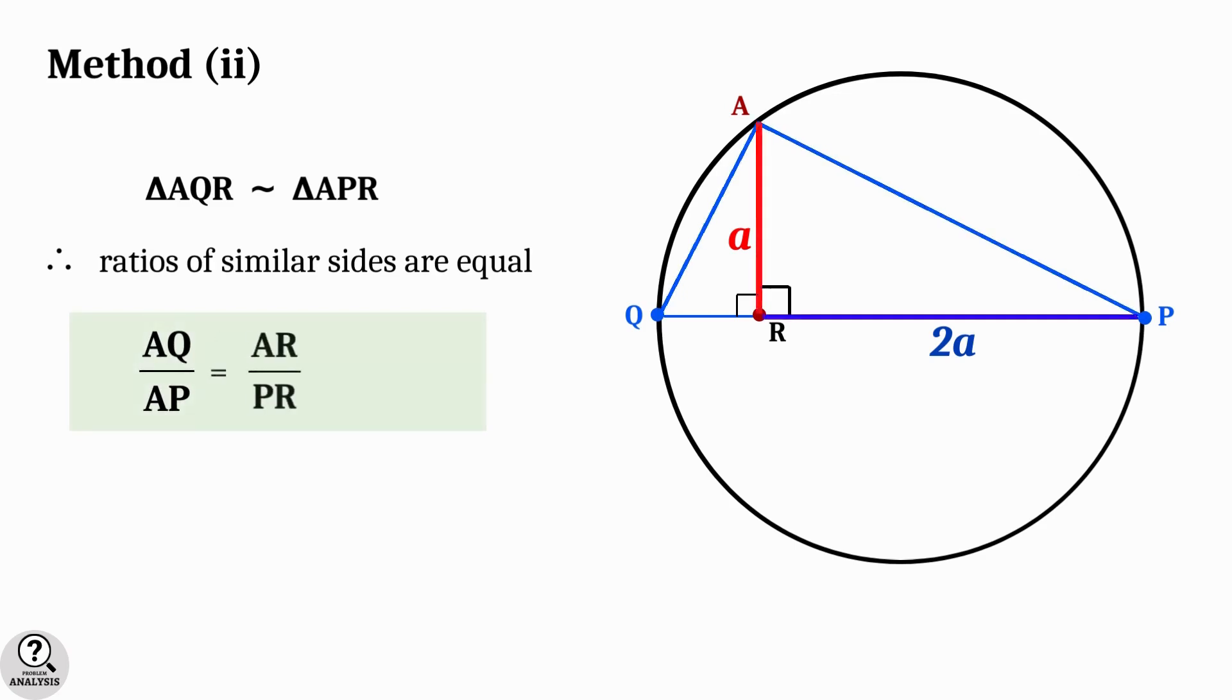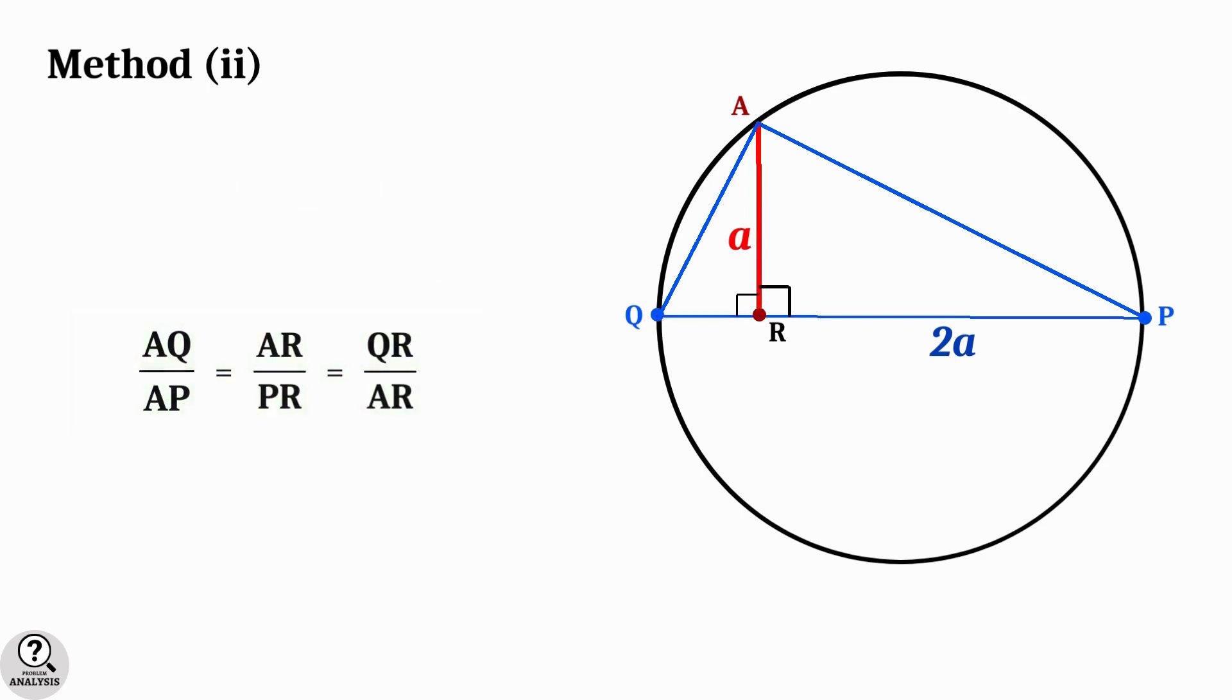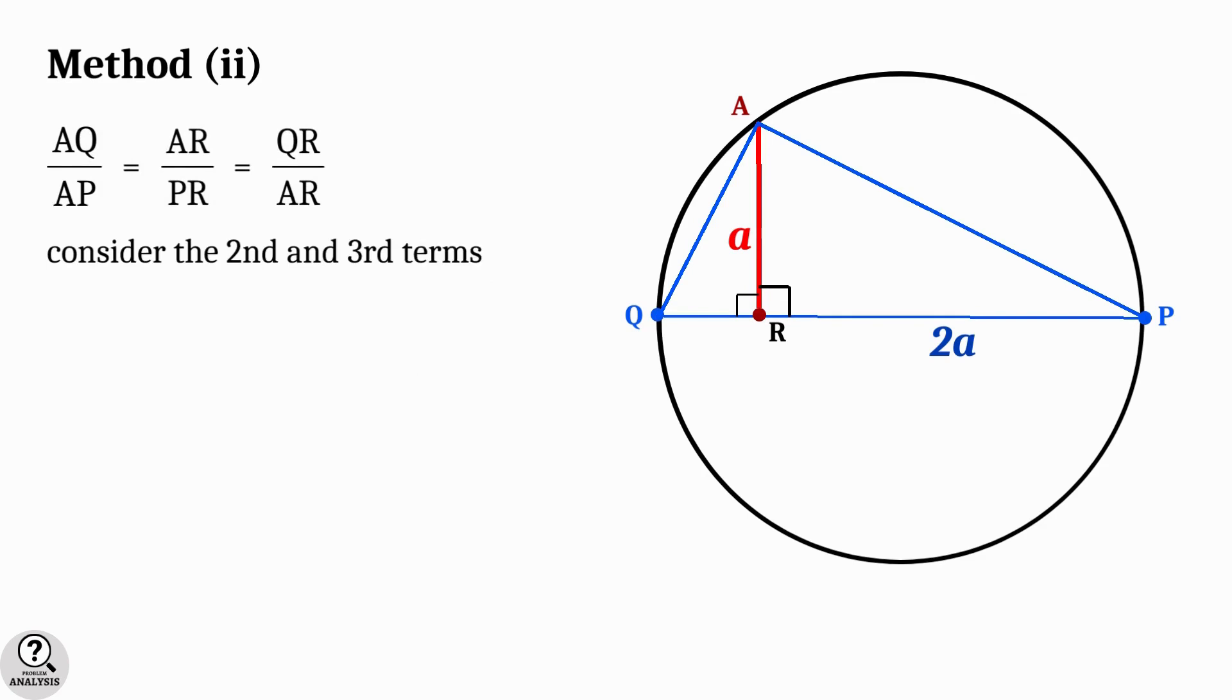That is, AQ by AP is equal to AR by PR is equal to QR by AR. Now in this equation, consider the second and third terms. That is, AR by PR equal to QR by AR.